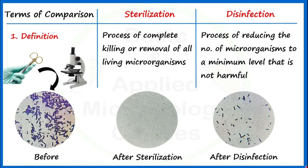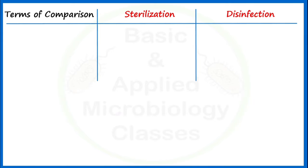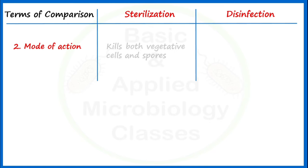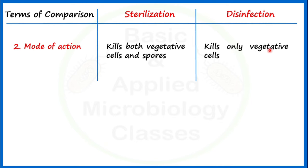Let's move towards the second point: mode of action. Sterilization kills both vegetative cells and spores. On the other hand, disinfection kills only vegetative cells. In other words, sterilization is a kind of sporicidal process — it can result in killing of spores also. Disinfection is a kind of non-sporicidal process.